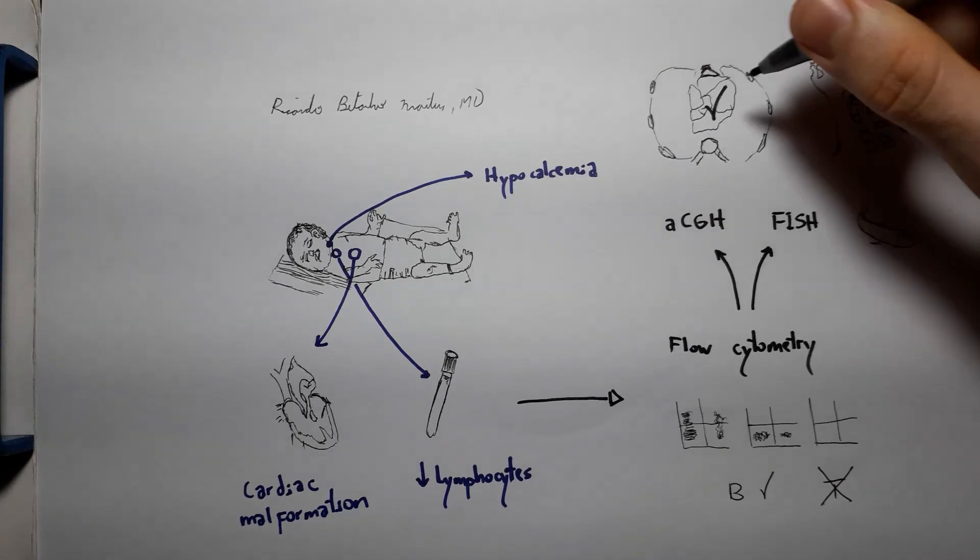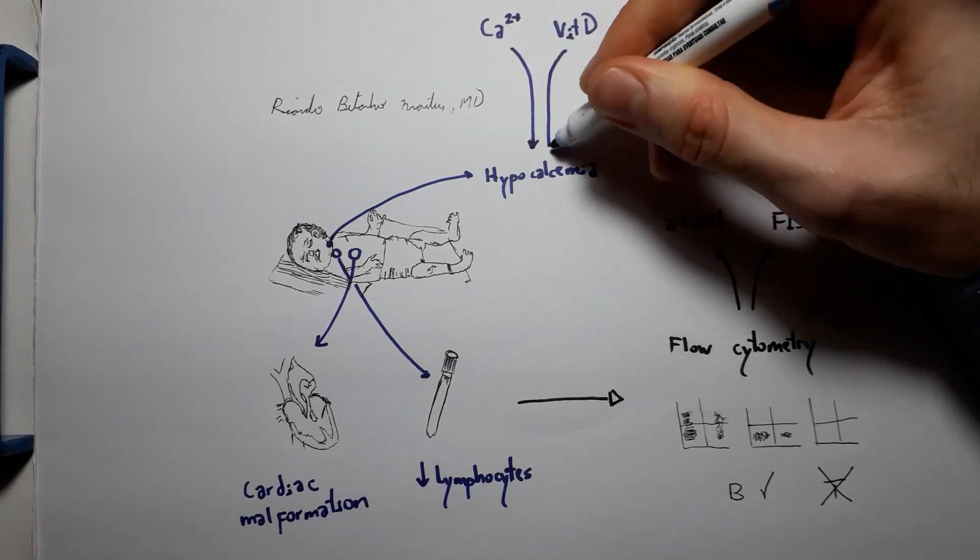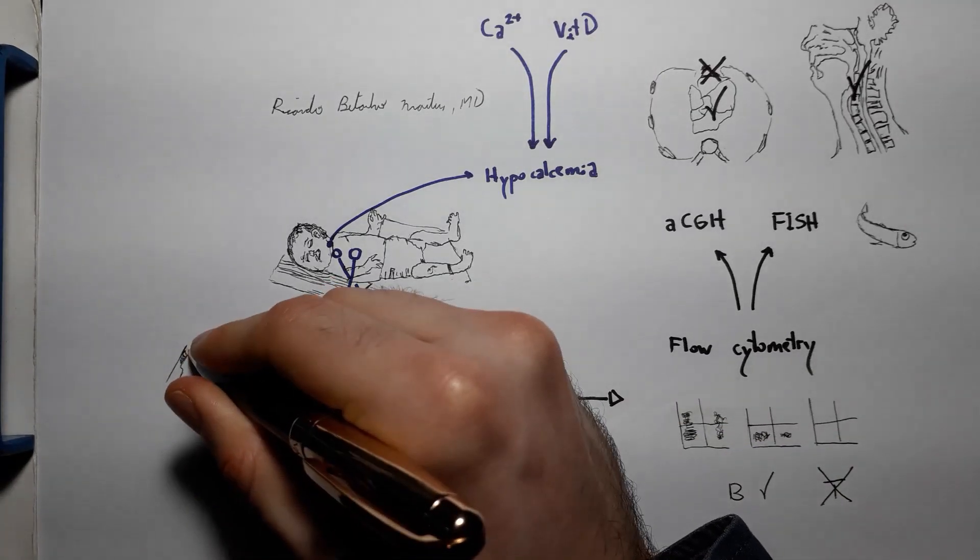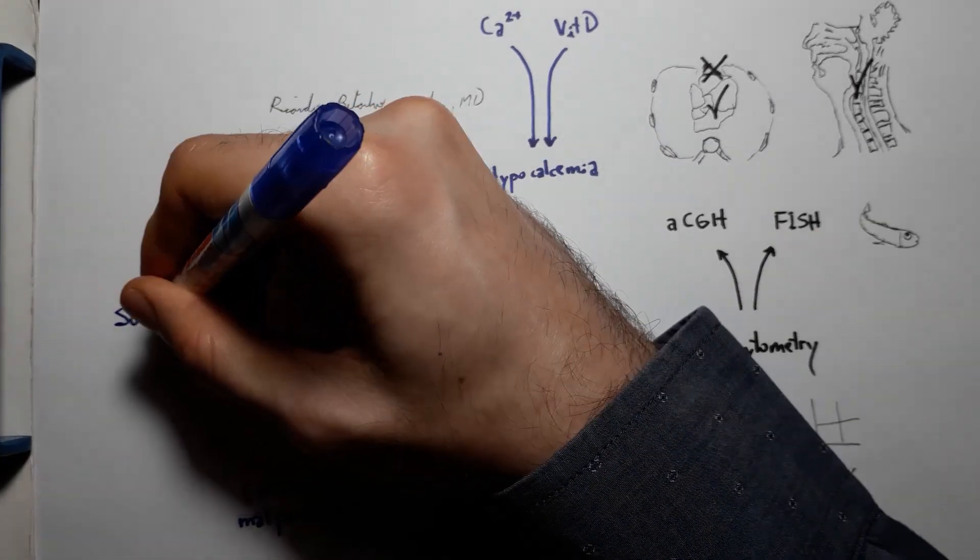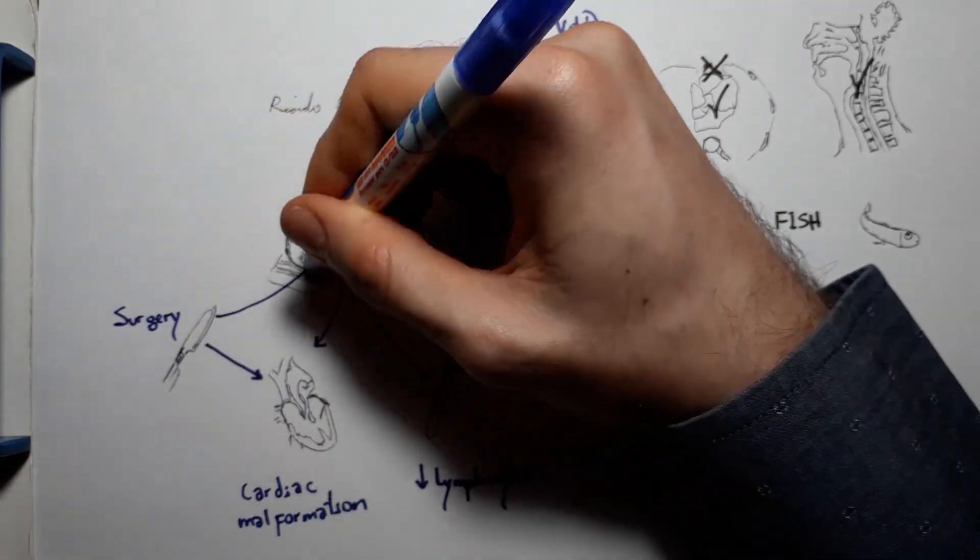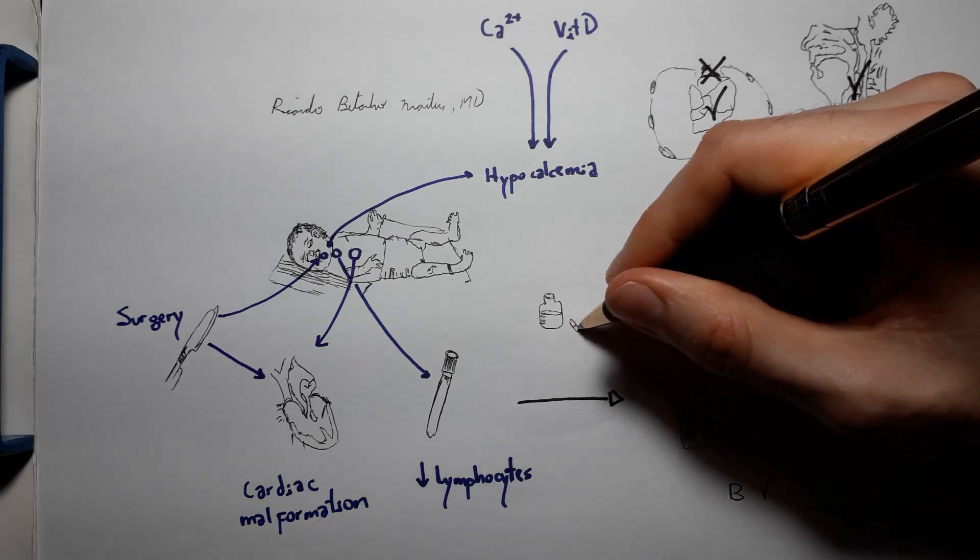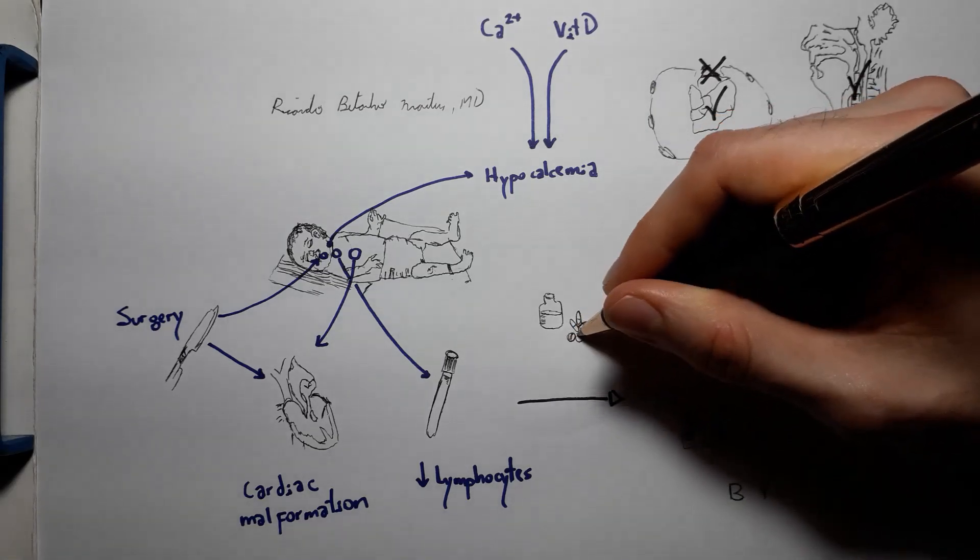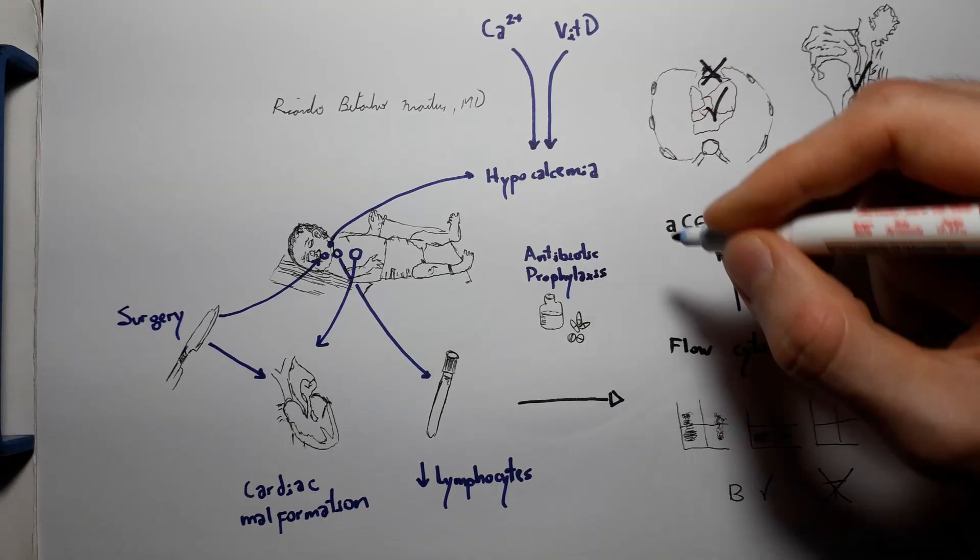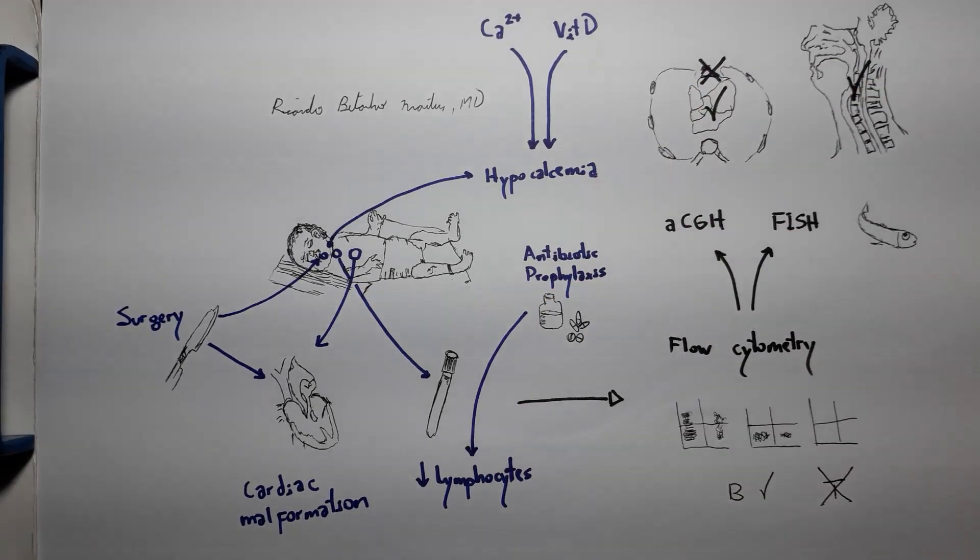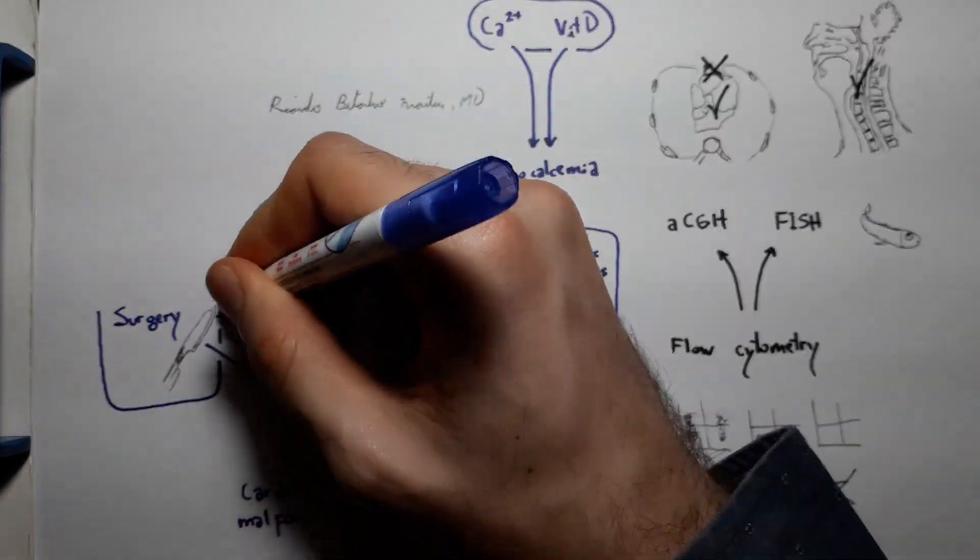Treatment will involve calcium and sometimes vitamin D supplementation for the hypocalcemia, surgical repair for the cardiac defects, surgical repairs for cleft palate and other facial defects, and prophylactic antibiotics and antifungals to prevent infection. In patients with the severe and rare thymic aplasia, an early thymic transplant or a hematopoietic stem cell transplantation can show some benefit.